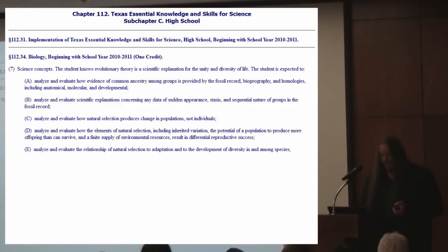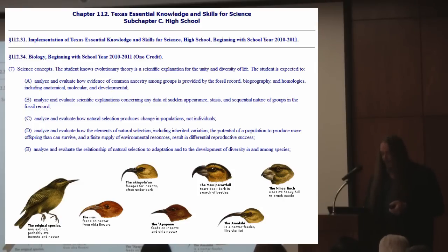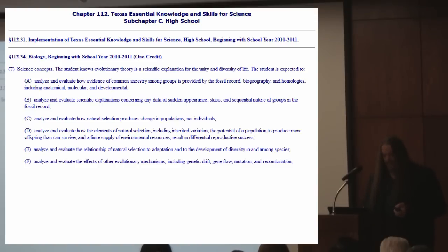Analyzing the relationship of natural selection to adaptation and the development of diversity in and among species: it's not always about surviving, it's about thriving. Those lineages with even the slightest advantage will proliferate beyond those who have more of a struggle or fewer resources. Different regions will have different demands, and those who inherit a greater advantage will become more abundant in those areas. The mechanisms of evolution include genetic drift, gene flow, mutation, and recombination.